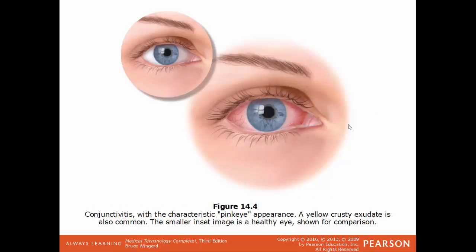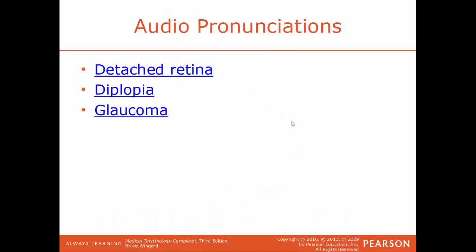In this image we have an example of conjunctivitis or pink eye. Normally the eyeball's sclera should be white, but when the conjunctiva — that membrane — gets infected, it becomes very reddish or pink in color.